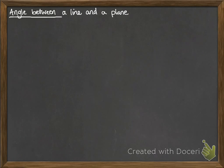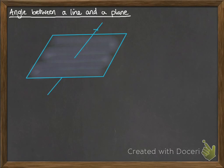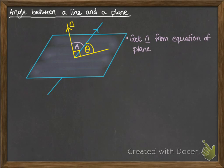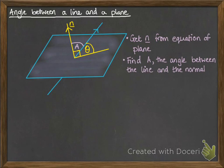Just a note — I'm not going to go through an example of this, but if you're asked to find the angle between a line and a plane, this is what you do. The angle we usually discuss is the acute angle — the smallest one, which might actually be underneath the plane. The normal to the plane would be at 90 degrees to the plane. So you get the normal from the equation of the plane, work out the angle A between the line and the normal using the scalar product, and then the angle between the line and the plane is 90 degrees minus A.